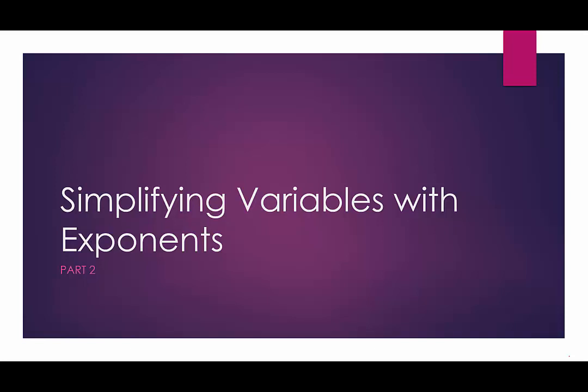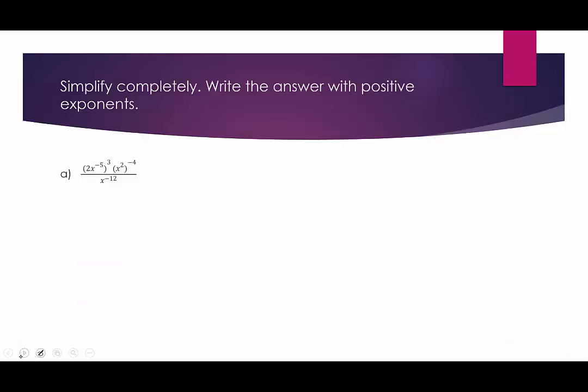Now we're going to look at some more complex examples of simplifying variables with exponents. In our first example, the first thing we want to do is distribute the exponents. We're going to use the distributive property of exponents over multiplication.